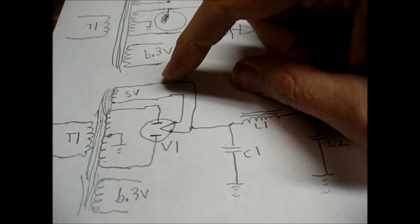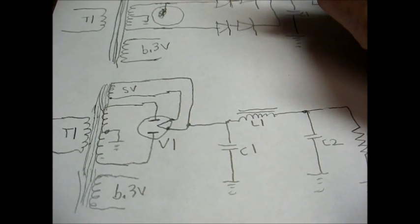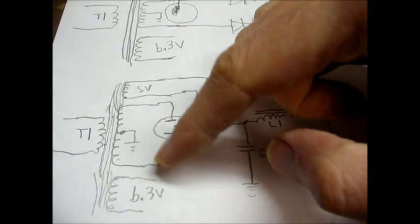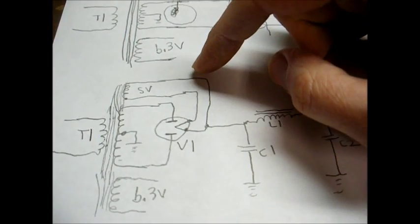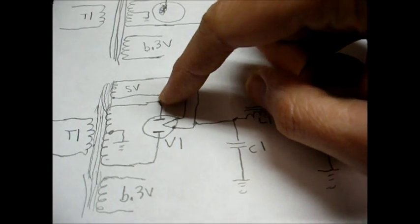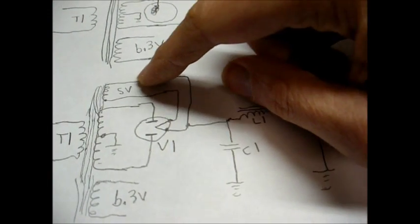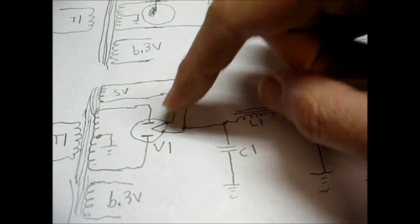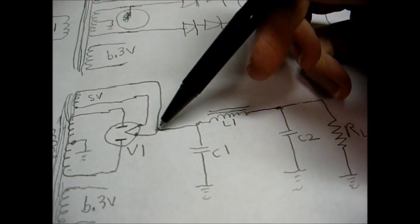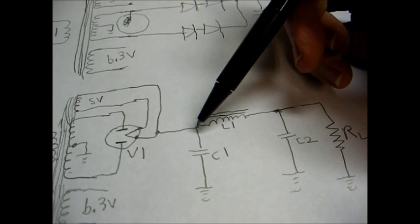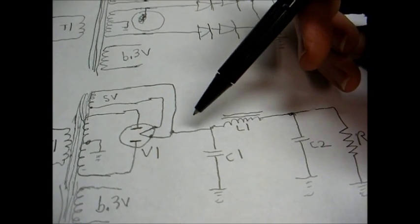The bottom winding provides 6.3 volts AC to the other tube filaments in the set. The top winding provides 5 volts AC to the tube filament of the 5Y3 or 5U4. And this big center tap winding here is normally around 700 volts center tap, so we're applying about 350 volts AC to each plate of the rectifier tube. The 5-volt winding connects to the filament of the rectifier tube, which also serves as the cathode.